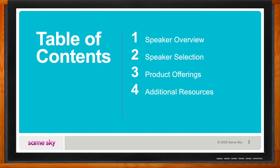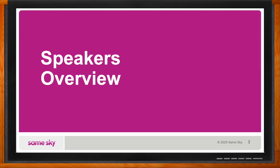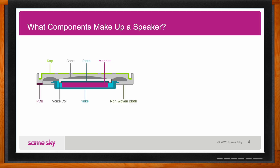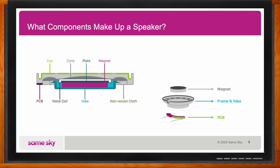Give me a quick review of the anatomy of a speaker. Starting from the bottom to the top: on the bottom we have the PCB, which most often only facilitates routing from the terminals to the voice coil. After this, we have a frame and yoke — these provide a rigid structure to contain the assembly and allow mounting. Right above this, we have the magnet, a permanent magnet that provides a magnetic field for the voice coil to interact with.